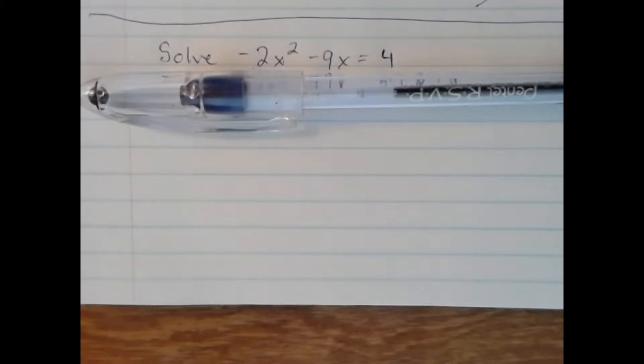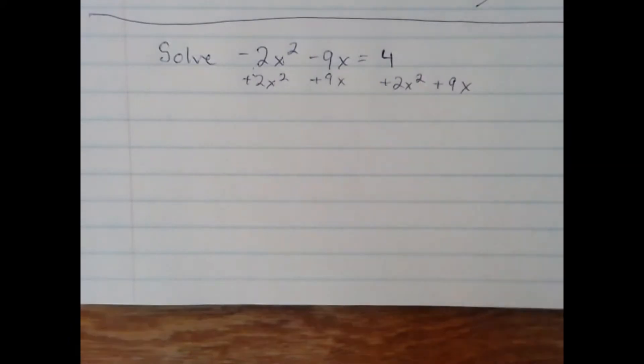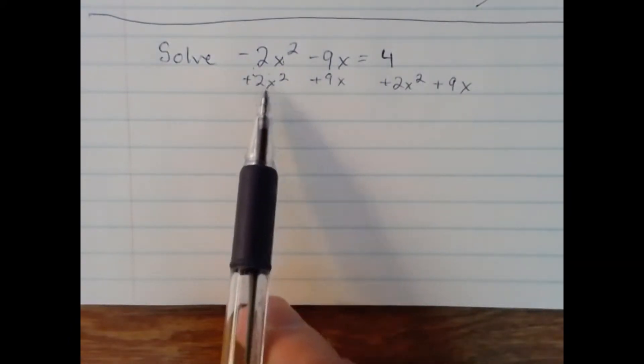But first, we need to get everything to one side. Now, I don't like the negative 2 next to the x², so I'm going to convert that to a positive 2. And I can do that by simply adding it to both sides of the equation.